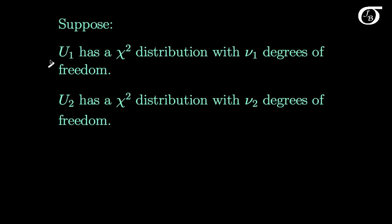Suppose we let the random variable U1 have a chi-square distribution with nu1 degrees of freedom — nu is the Greek letter, in case you have not encountered that before. We're going to let the random variable U2 have a chi-square distribution with nu2 degrees of freedom, and we're going to let U1 and U2 be independent random variables.